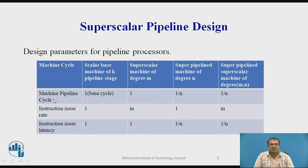The first parameter is the machine pipeline cycle. The base cycle is 1 in the case of the scalar base machine, and here also it is 1. In the case of the superpipeline machine of degree N, it is 1/N. And for the superpipeline superscalar machine, it is also 1/N.